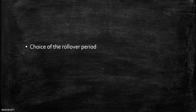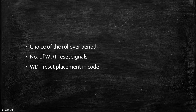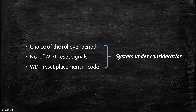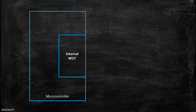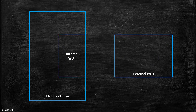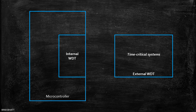Now, things like the choice of rollover period, how many times the watchdog should be kicked, and at what places in the code it should be reset — all of these things depend entirely on the system under consideration. Systems can use an inbuilt watchdog timer or an external one. An external one is preferred for remote or frequently inaccessible, as well as critical systems that need to be up and running as soon as possible.